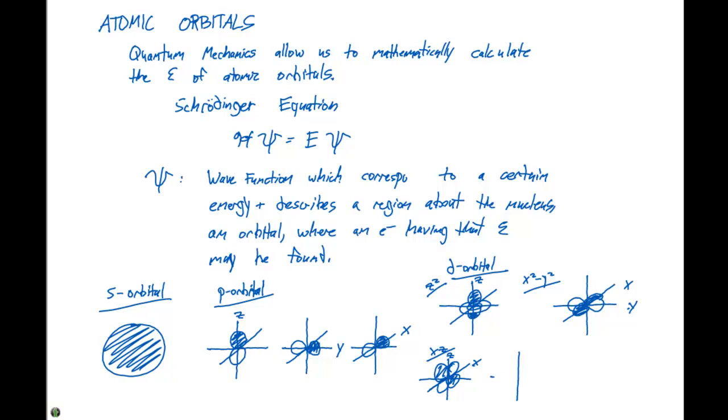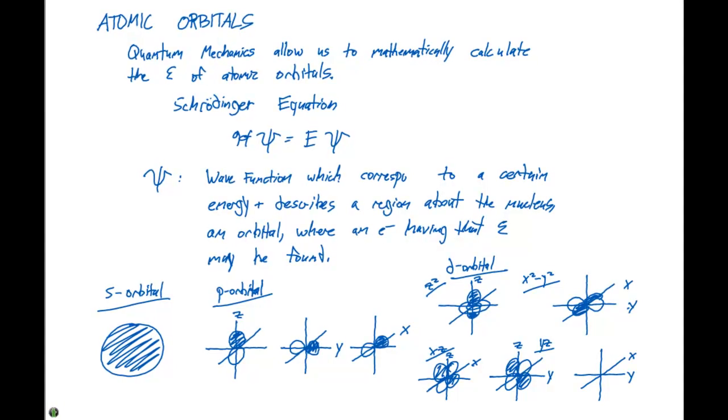The dyz orbital has a lobe in each of the four quadrants of the YZ plane. Finally, the dxy orbital falls along each of the quadrants in the XY plane.